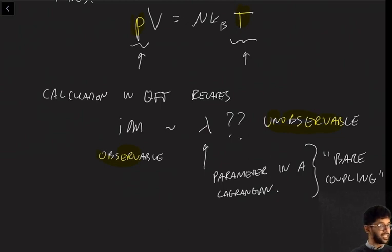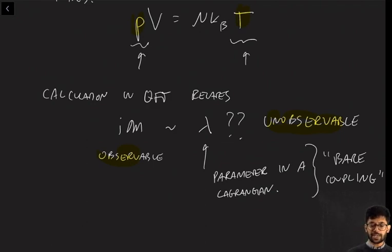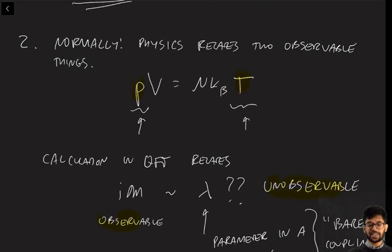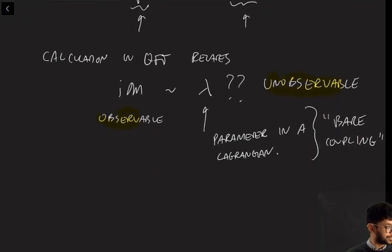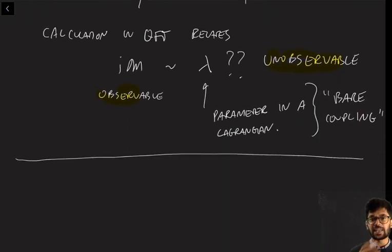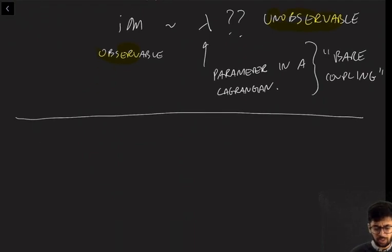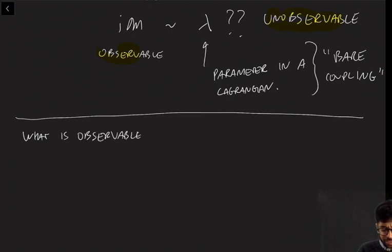Therefore, there is no immediate reason to panic, because we can't observe this infinity, this divergence. Rather, we should reorganize our calculation so it's more like the ideal gas law — relating an observable quantity to another observable quantity. So how do we replace lambda with something observable? Lambda is basically a strength of a coupling, and we're trying to give lambda some sort of physical meaning.